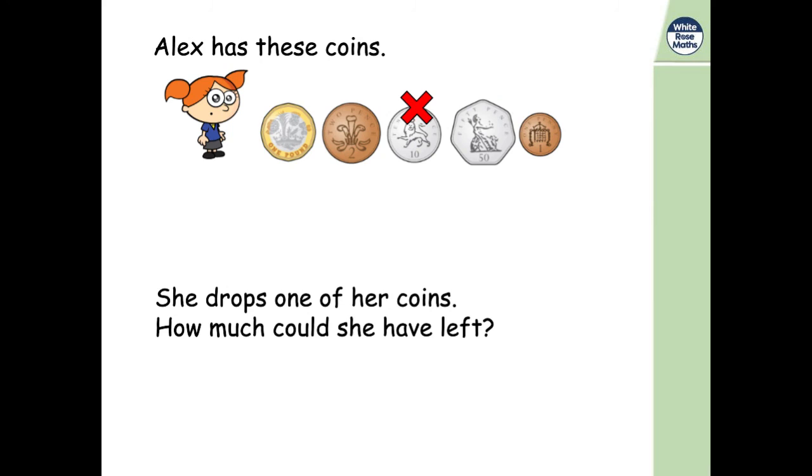Okay. If she dropped the 10 pence coin, let's add the pound and our 50 pence and our two pence. Remember, size order, just making it a little easier. Add the one pence. One pound and 53 pence this time.